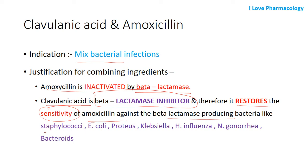The beta-lactamase-producing bacteria include: Staphylococci, E. coli, Proteus, Klebsiella, H. influenzae, Neisseria gonorrhoeae, and Bacteroides.